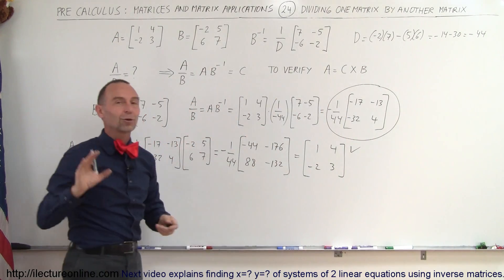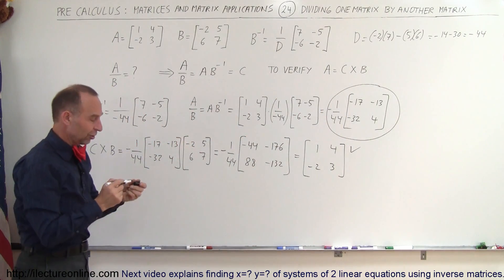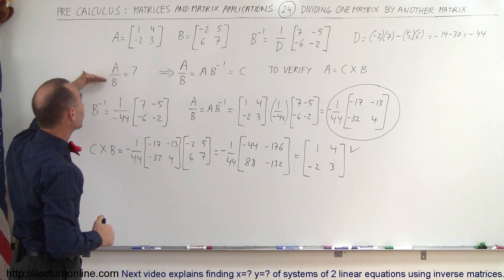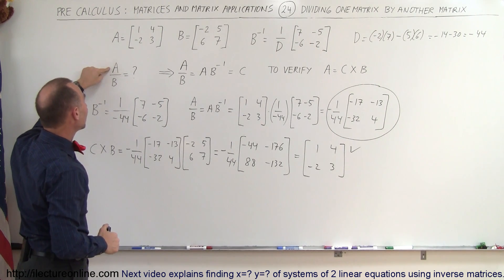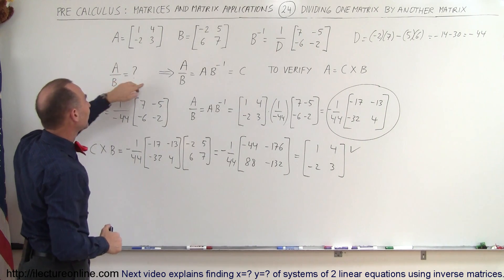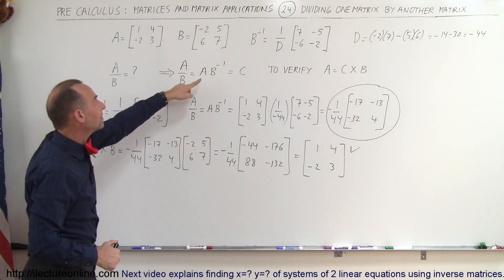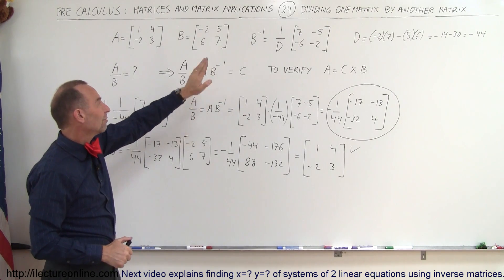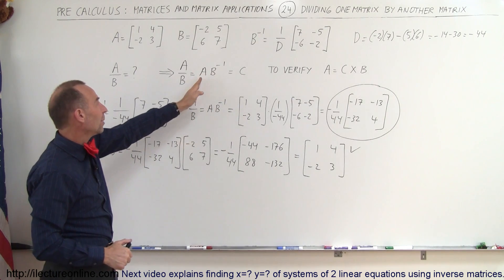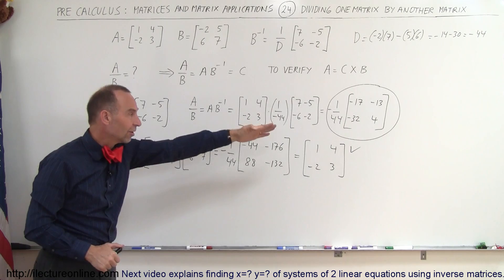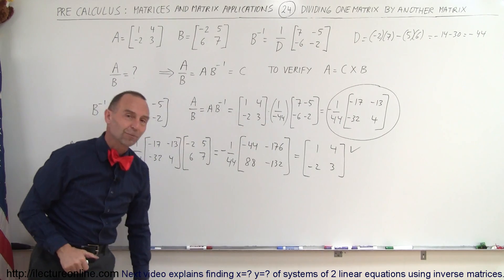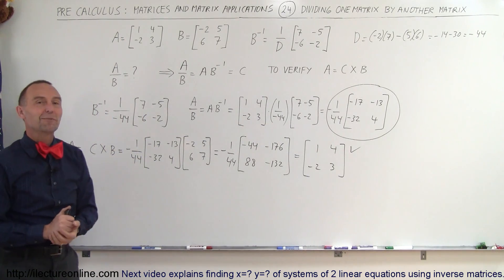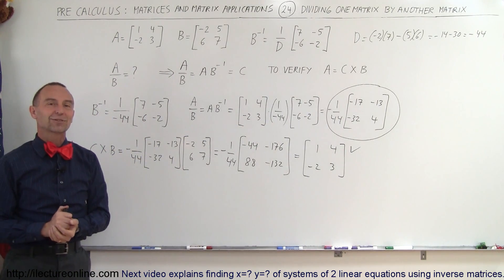That confirms we found the correct solution. So I've shown you how to find the quotient of two matrices: when you have A divided by B, that's the same as A times the inverse of B. Find the inverse of B, multiply A times that inverse, and you get the solution — that's how we divide one matrix by another.